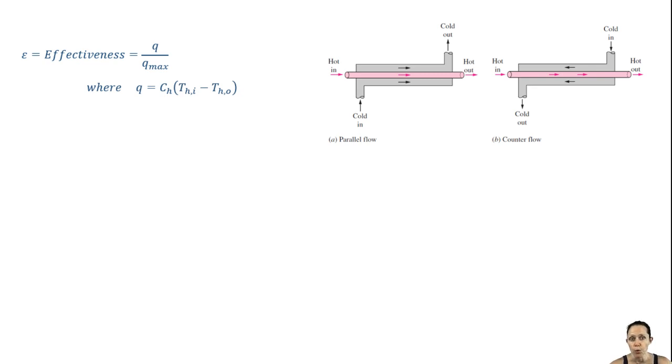The heat transfer rate between the two fluids can be defined by an energy balance on the hot fluid or an energy balance on the cold fluid. Notice that we've put things in terms of the heat capacity rates, which as you recall is the mass flow rate times the specific heat.